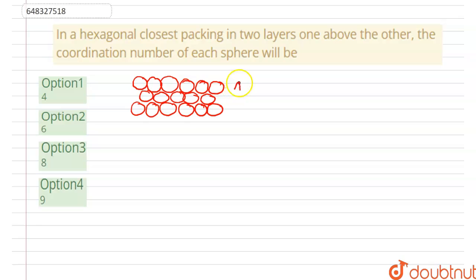So, this we can name as layer A, this we can name as layer B, then again A and so on. It will continue.